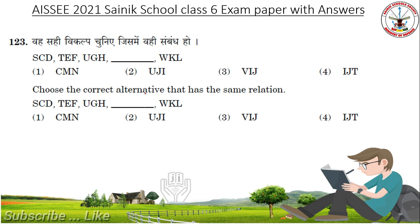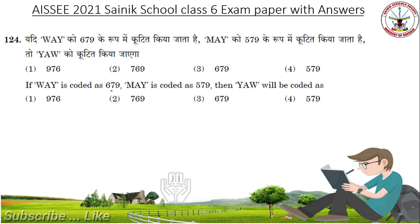Choose the correct alternative that has the same relation. S, C, D; T, E, F; U, G, H; D, S, W, K, F. Answer is V, I, J. W, A, Y is coded as 6, 7, 9. May is coded as 5, 7, 9. Then Y, A, W will be coded as? Answer is 9, 7, 6.